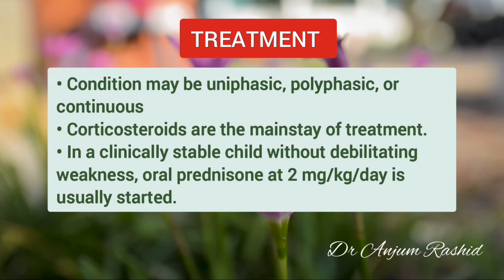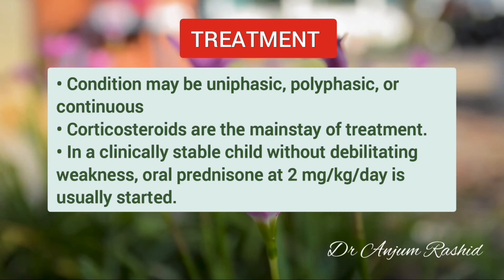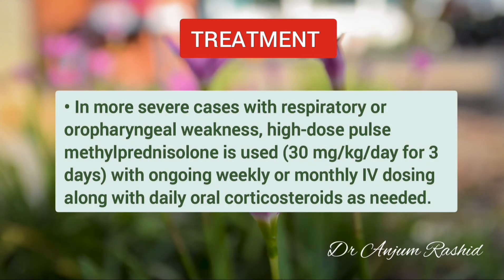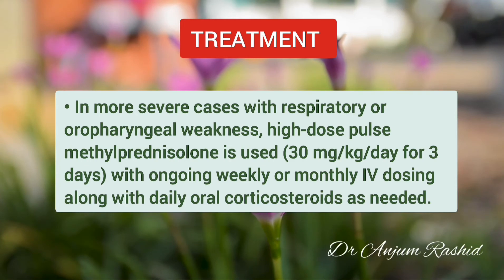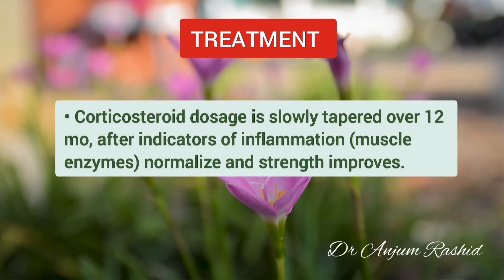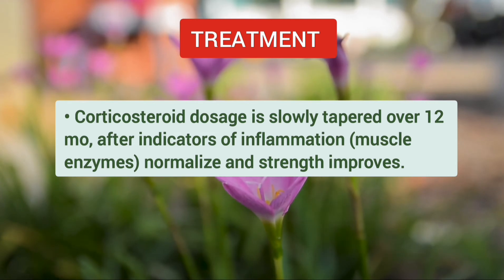Juvenile dermatomyositis may be uniphasic, polyphasic, or a continuous condition. Corticosteroids are the mainstay of treatment. In a clinically stable child, oral prednisone 2 mg per kg per day is usually started. In more severe cases with respiratory or oropharyngeal weakness, high-dose pulse methylprednisolone is used with ongoing weekly or monthly IV dosing along with daily oral corticosteroids. The corticosteroid dose is slowly tapered over 12 months after muscle enzymes normalize and strength improves.